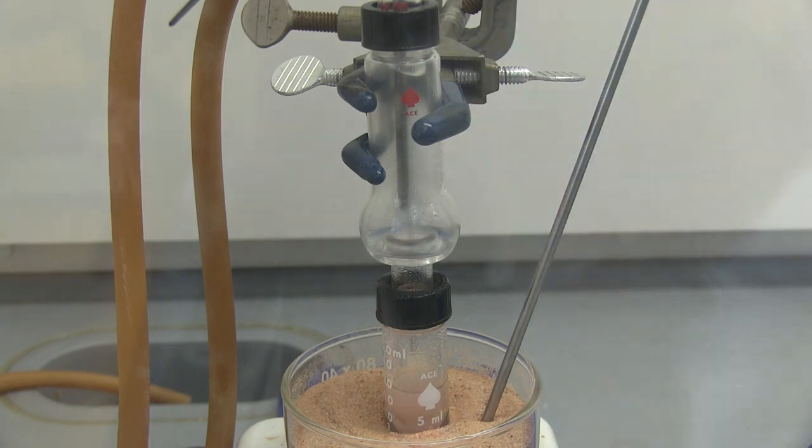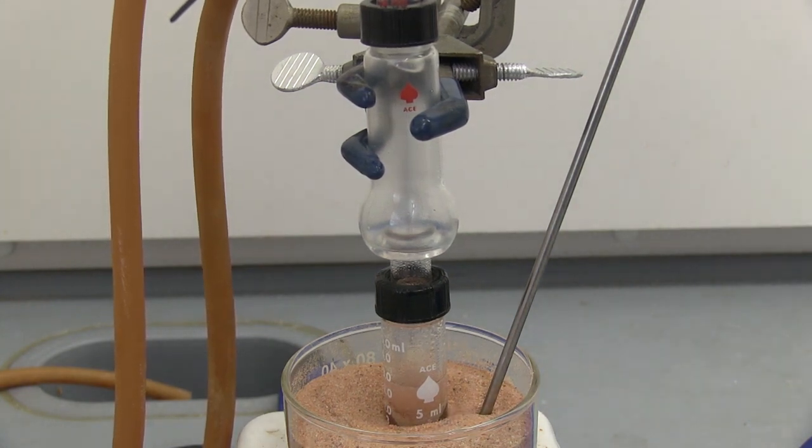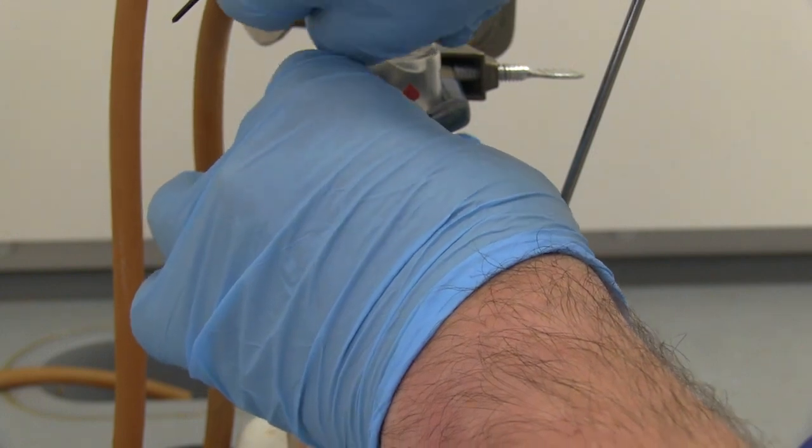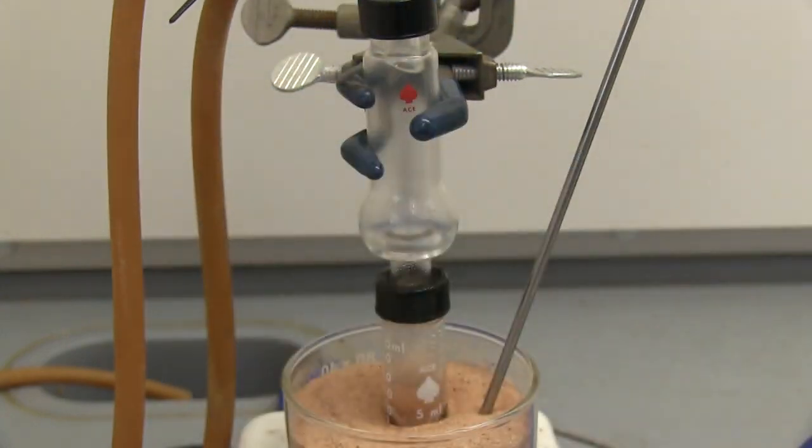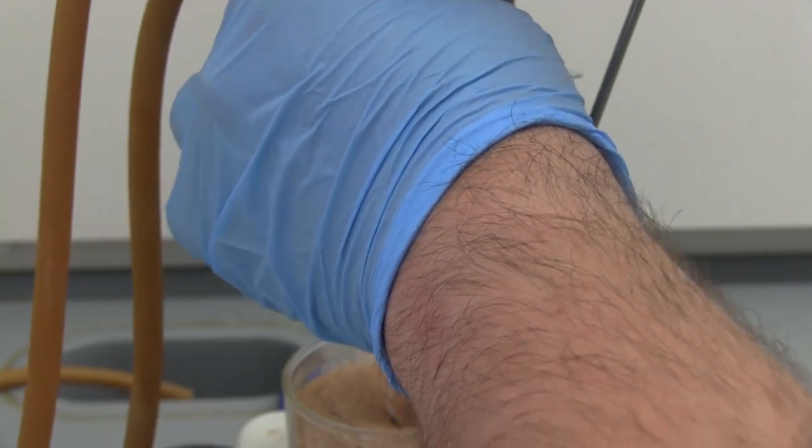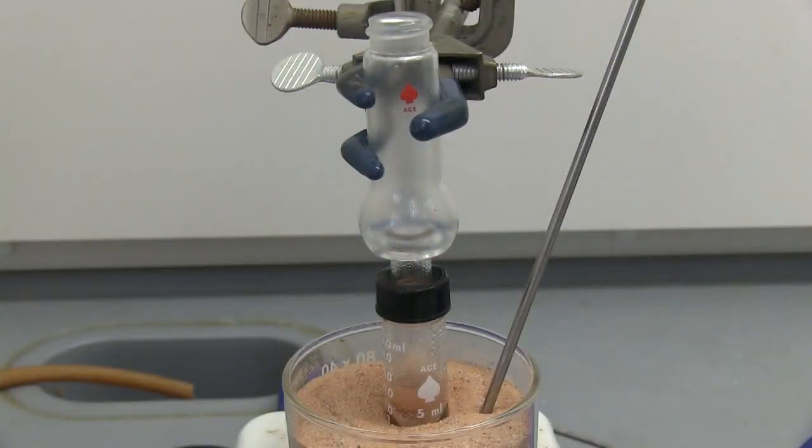Looks like we have enough liquid in there, so I'm going to go ahead and make sure the heat's off all the way, and raise up, take our thermometer out, and get it to the side. Turn off our water, and disconnect the water condenser. Lay it off to the side, and we'll drain the water out of it in a moment.